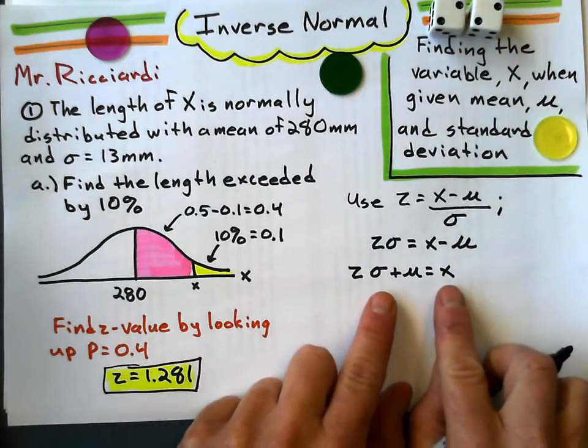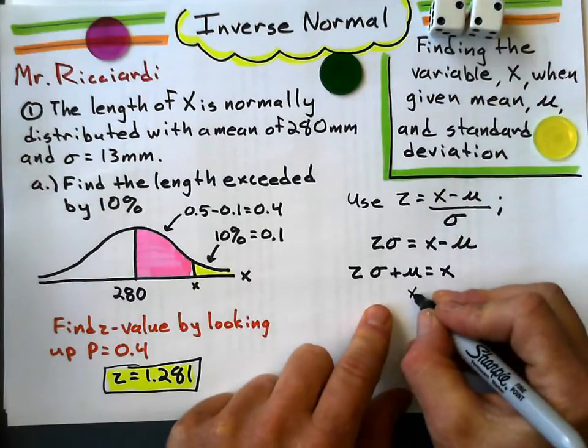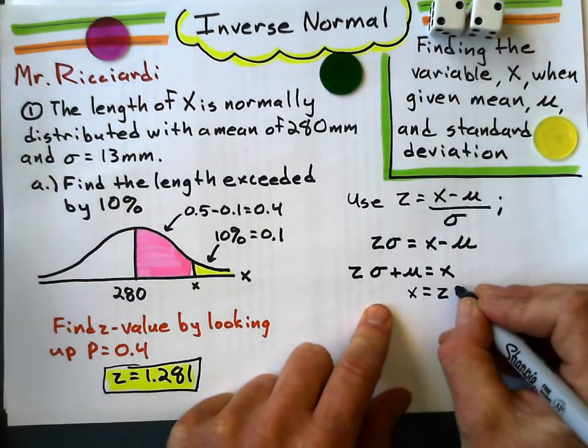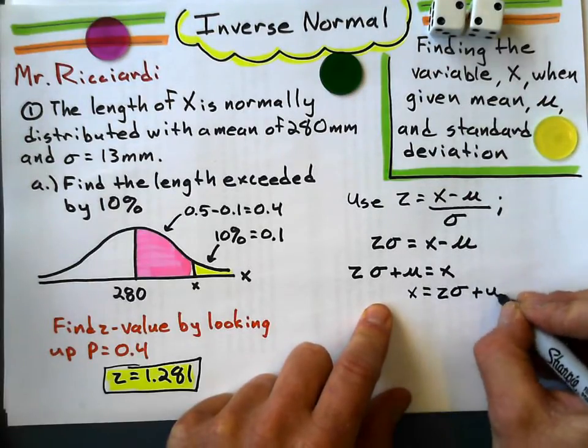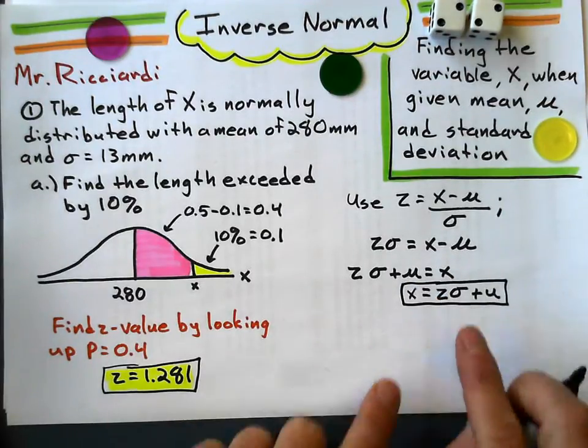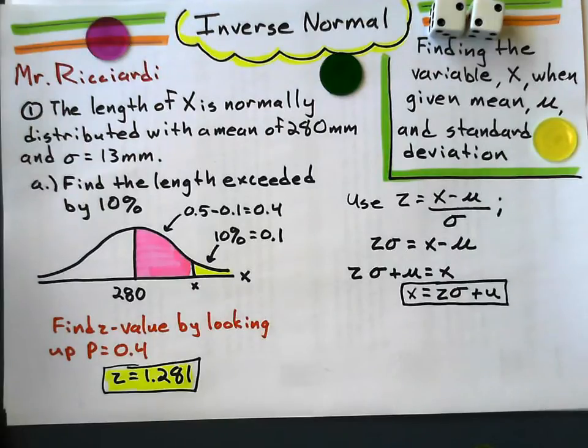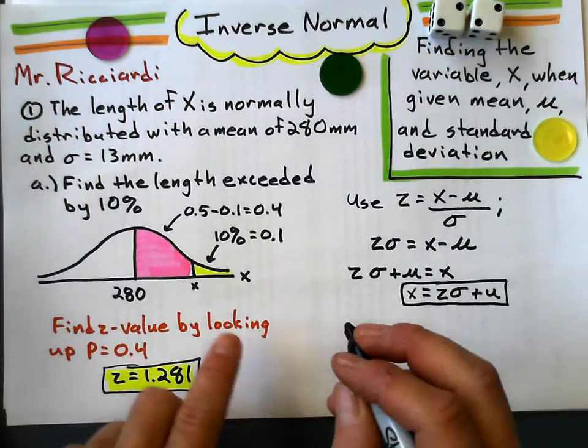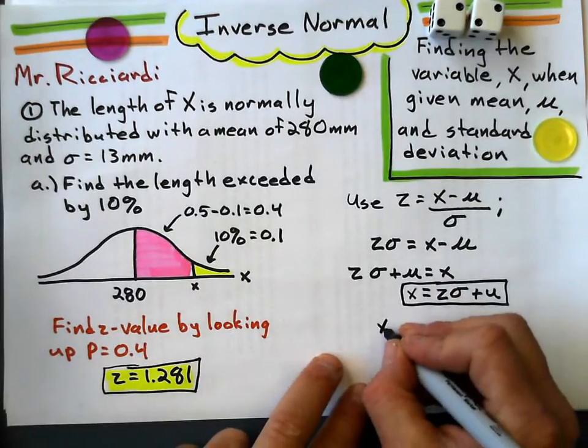I multiply Z by the standard deviation, and I get Z times the standard deviation equals X minus the mean. And then I just add the mean to the other side, to get X by itself. Now, that's pretty handy, because now that I've got X by itself, let's just write it like X equals Z times the standard deviation plus the mean. It's a lot easier to substitute than it is to solve that, I think. So we go, what is that X?